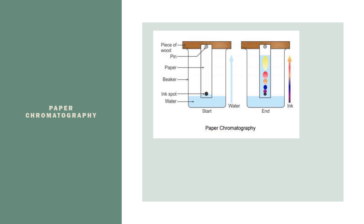As the water is drawn up the paper, when it encounters the mixture, the mixture gets drawn up with the water. Different materials in the mixture will have different intermolecular forces with water, and the ones with the strongest attractions to water will move the furthest up the paper. In this case, the yellow spot has the most attractions because it travels the furthest up.